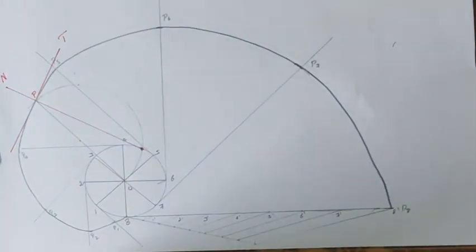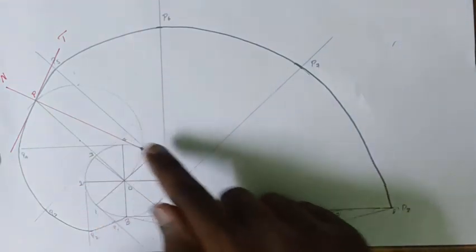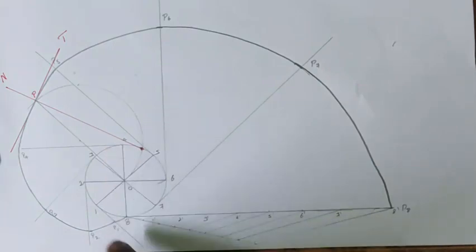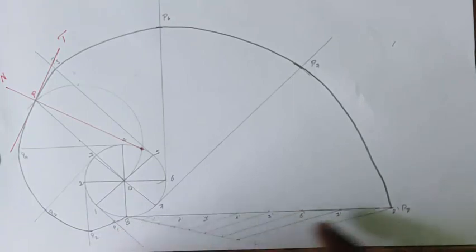So now we have drawn the tangent and normal of the involute that we have drawn. So first we have drawn the simple circle and then we have divided the circle into 8 equal parts.